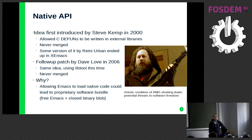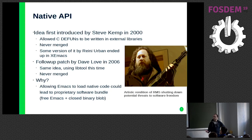It ended up in XEmacs, which is a fork of Emacs some of you might remember. In 2006, Dave Love tried again with the same idea, but this time he used libtool for the dynamic loading — a tool and set of libraries that makes it easy to dynamically load the equivalent of DLLs or shared objects on Linux. This API works on every platform, so it was more portable. But again, never merged.